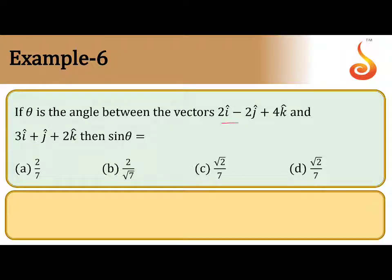The angle between the vectors 2i minus 2j plus 4k and 3i plus j plus 2k, then find sin theta.